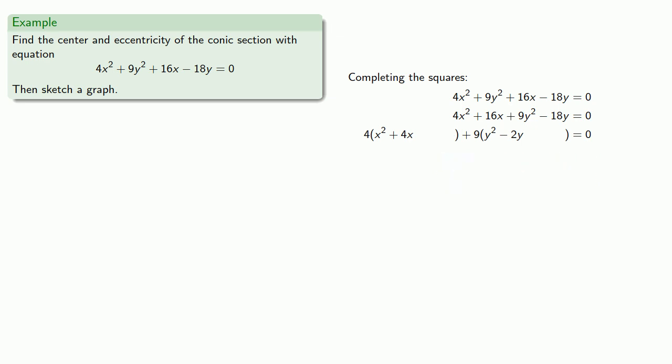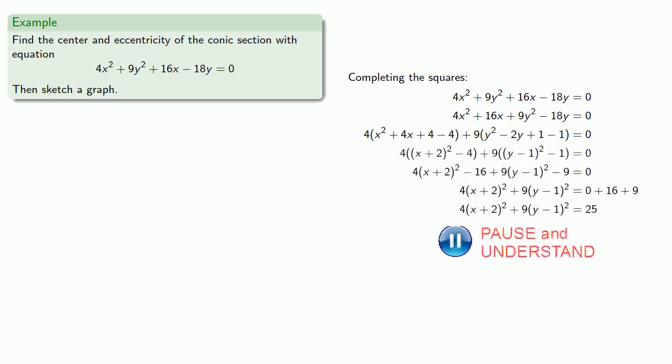To complete the square on x² + 4x, we need to add 4, and to pay for it, we'll subtract 4. Similarly, we'll complete our square on y² - 2y and do a little algebra.